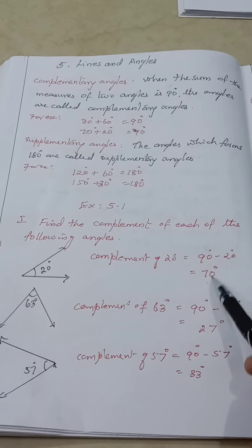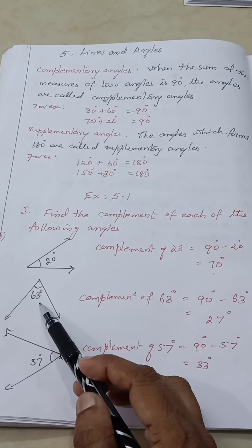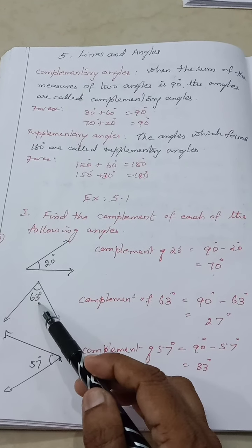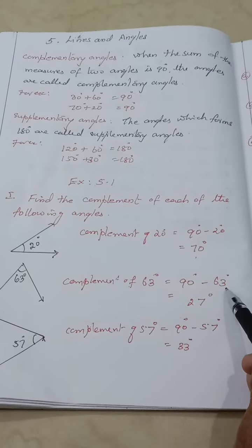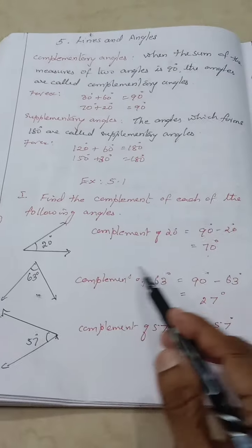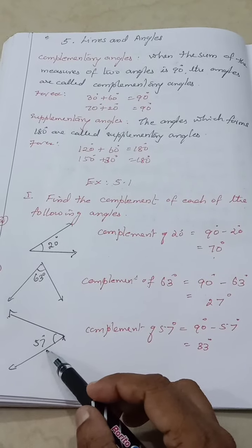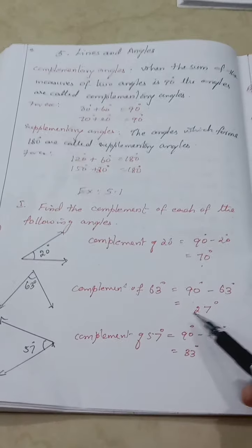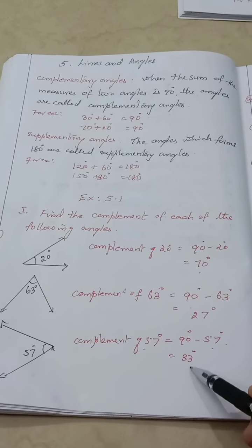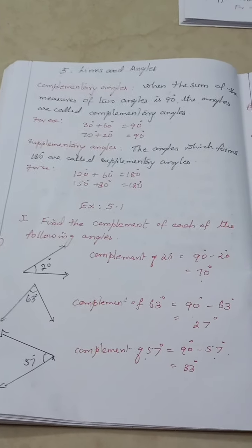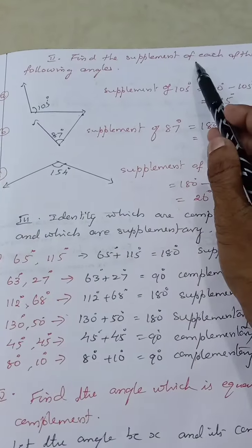To find the complement of 63 degrees: 90 minus 63 equals 27 degrees. So the complement of 63 degrees is 27 degrees. The complement of 57 degrees is 90 minus 57, which equals 33 degrees.